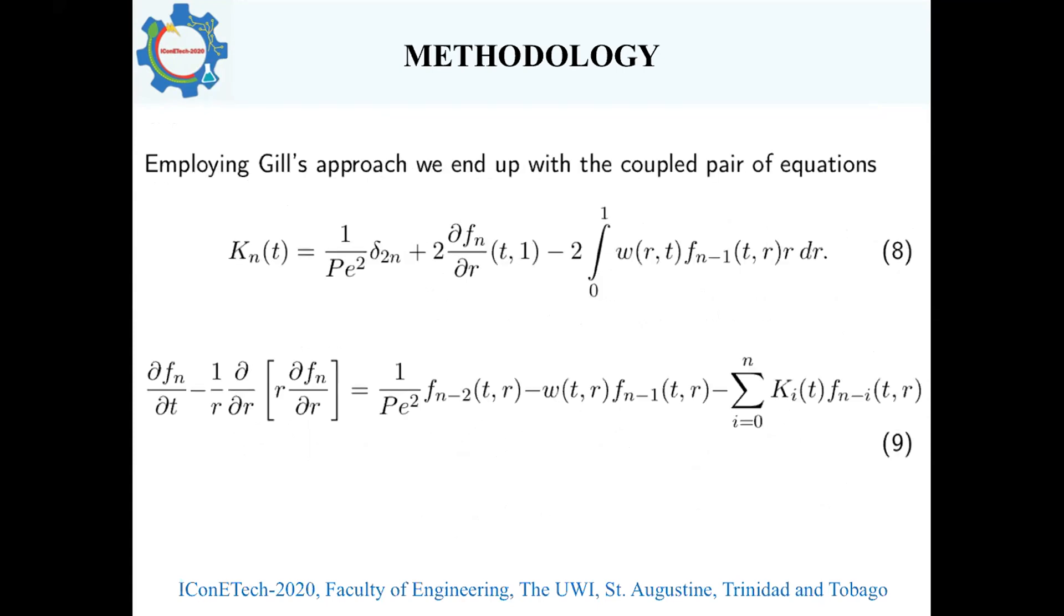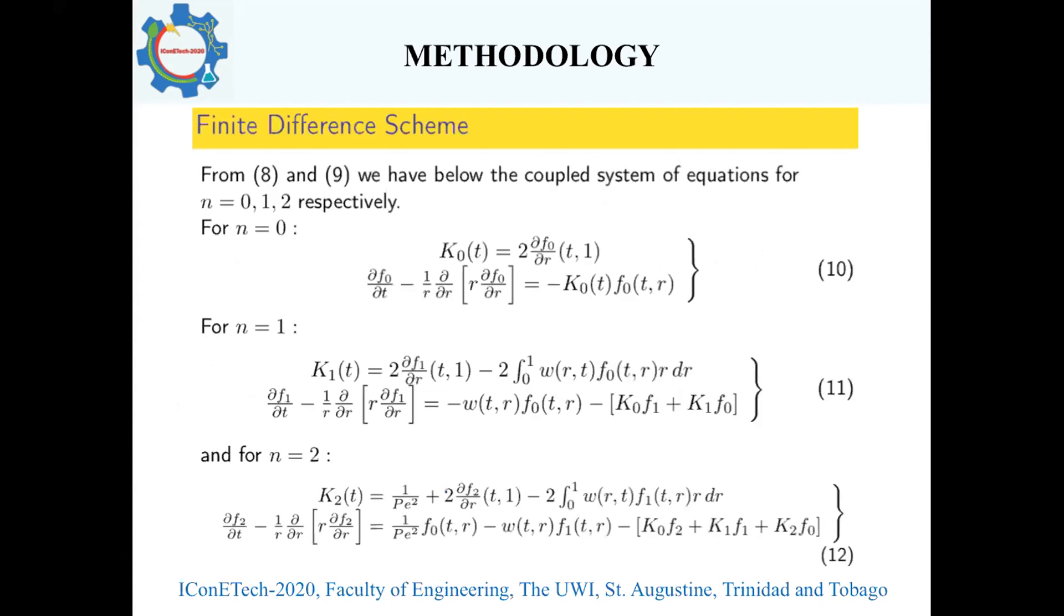Employing Gill's approach and having carried out some mathematical maneuvers, we obtain equations eight and nine, where the K_n are what we call our transport coefficients and our F_n are representative of our concentration. Equations eight and nine are a coupled pair of equations which we solve using a finite difference scheme.